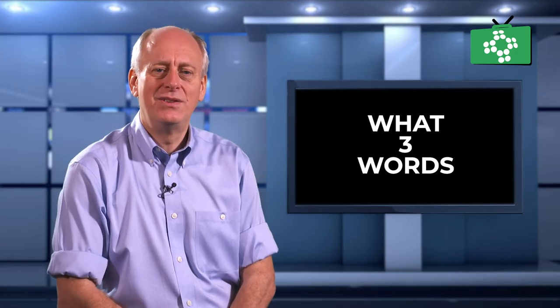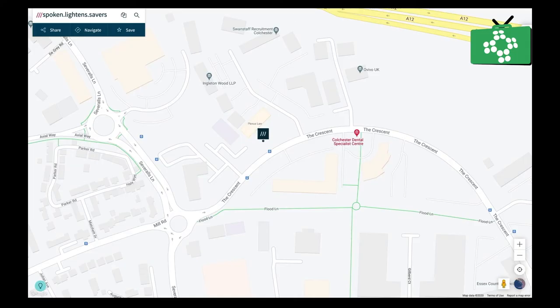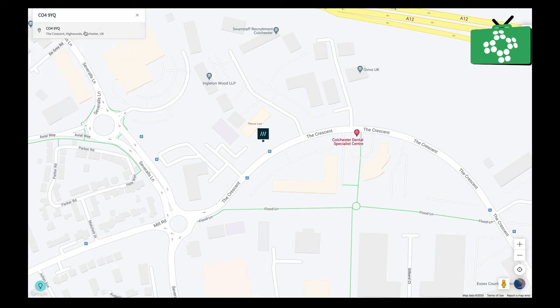To find a location, you can visit the What3Words website at what3words.com, and then you can search a postcode or a place. In this example, we are adding our office postcode. Then on the map, you can pinpoint the front door of our offices.